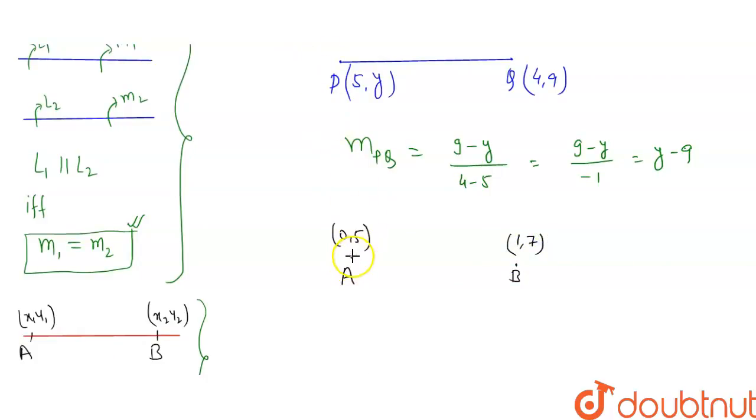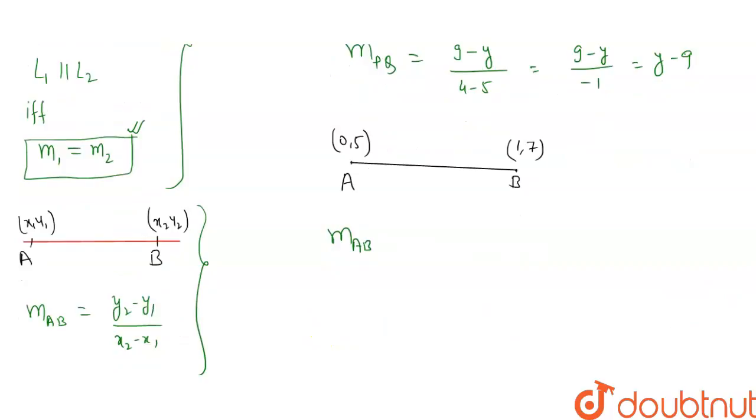So the line joining between these two points A and B will be like this. Slope of AB will be: again we will use this formula, y2 minus y1, which means 7 minus 5 upon 1 minus 0, which will be 2 upon 1, which means 2.